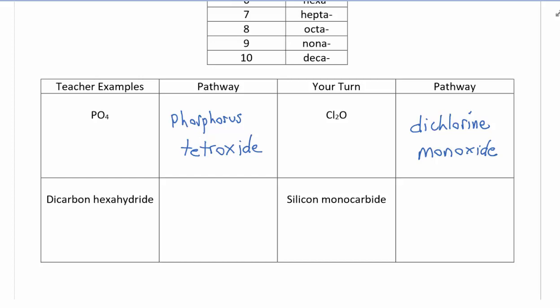So this first one, we have dicarbon hexahydride. Alright, so we can tell that the first element is going to be carbon, and that prefix di tells us that we need a subscript of 2. For the next one, we have hydride. So remember, before we changed the ending to ide, so we look on the periodic table to see what element hydride would be close to, and it's going to be hydrogen. So you write the symbol for hydrogen, and hexa is the prefix for 6. Perfect.